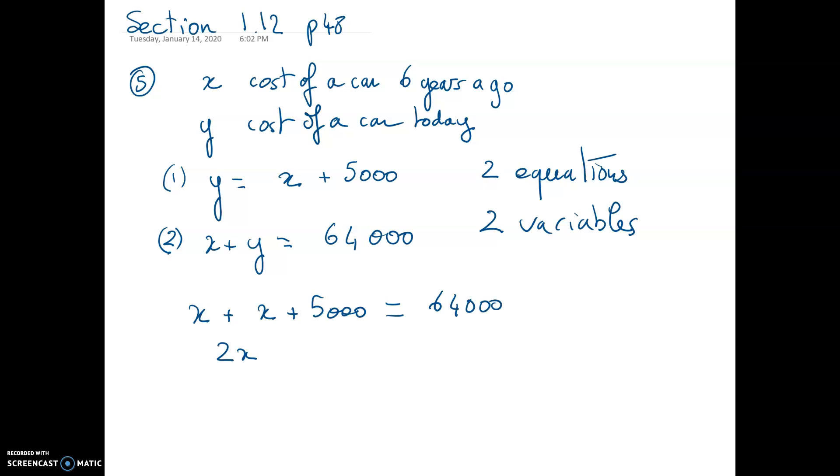So I end up with 2x plus $5,000 equals $64,000. I subtract $5,000 because I'm looking for the variable x. And once I find the variable x, I will be able to find the variable y.